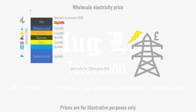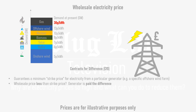Some generators, like offshore wind farms and the upcoming Hinkley Point C nuclear power plant, supply electricity on a contract for difference. This guarantees a minimum strike price for the electricity they provide to the national grid. If the wholesale price is less than the strike price, then the generator is paid the difference. However, in contracts for difference, if the wholesale electricity price is higher than the strike price, then the generator must pay back the difference in cost.